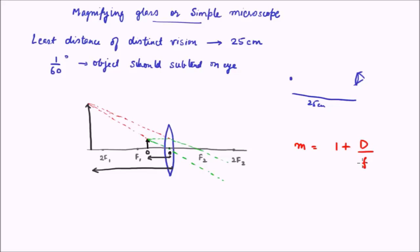Now the magnification for the simple microscope or magnifying lens is given by the relation M = 1 + D/f, where D is this distance, the distance at which the image is formed, and f is the focal length.